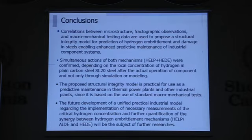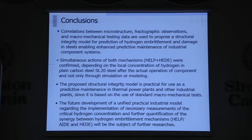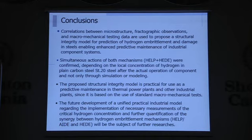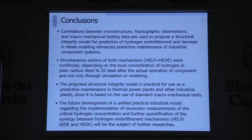Here is the conclusion: correlations between microstructure, fractographic observations, and micro-mechanical testing data are used to propose a structural integrity model for protection against hydrogen embrittlement and damage in steels, enabling advanced preventive maintenance of industrial systems. Simultaneous action of both HELP and HEDE mechanisms was confirmed depending on the hydrogen concentration in plain carbon steel after actual operation of components — not only through simulated or modeled specimens, but real components. The proposed structural integrity model is practical for preventive maintenance of thermal power plants and other industrial plants, since it is based on standard micro-mechanical tests. Future development of a unified practical industrial model will address critical hydrogen concentration measurement and further quantification of the synergy between these two mechanisms.